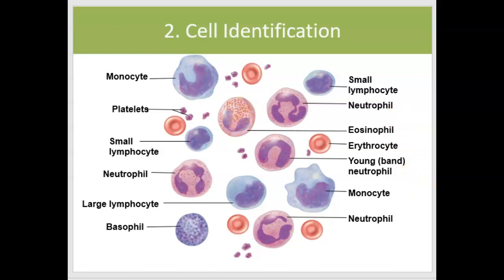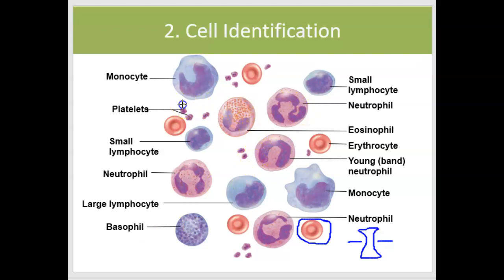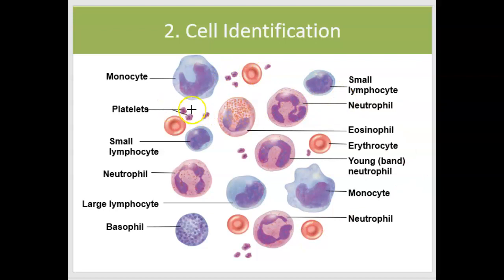We're going to move on to the second major topic: identifying the different types of blood cells. This picture is really a diagram — not actual cells under the microscope — but it's a good way to start learning. Red blood cells are smaller than white blood cells and have that divot in the middle; they're biconcave, so if you look at them from the side, you see the indentation on both sides. Platelets are really fragments of cells and are the smallest formed element in blood. White blood cells have nuclei, which you won't see in red blood cells or platelets.